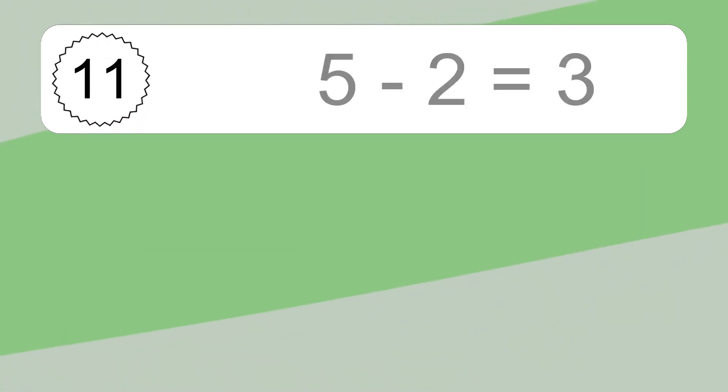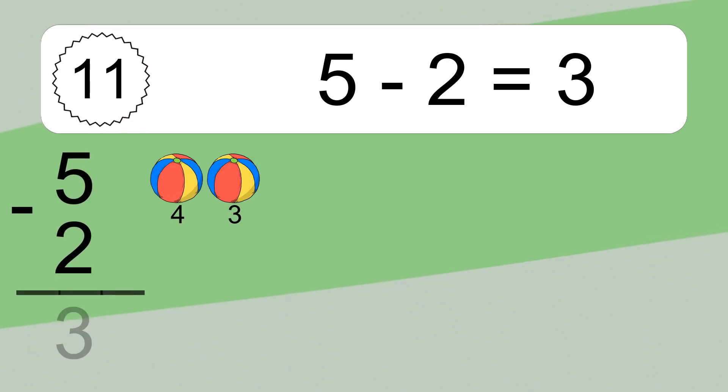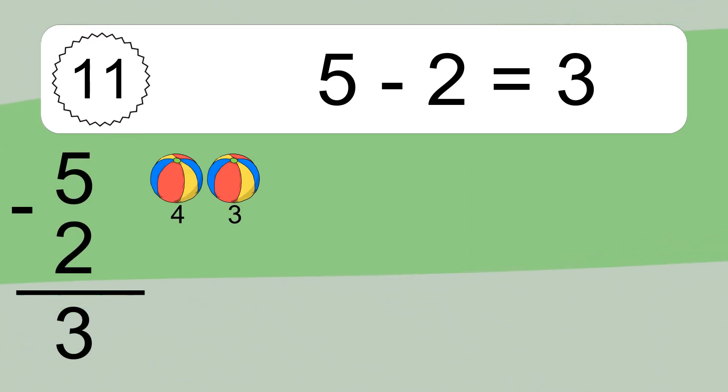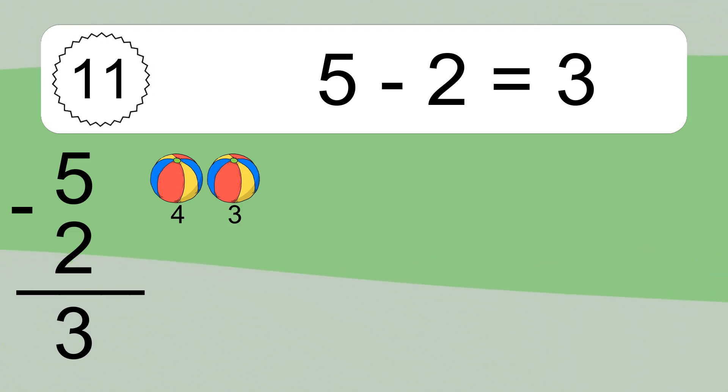5 minus 2 equals what? 5 minus 2 equals 3. Let's count it: 4, 3.